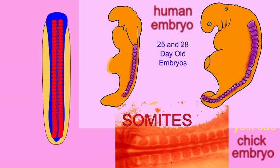Somites will continue into the prominent tail possessed in vertebrate embryos, including human embryos. In human embryos, this tail will degenerate, and the somites will contribute to the pelvic diaphragm, which helps support the pelvic organs.